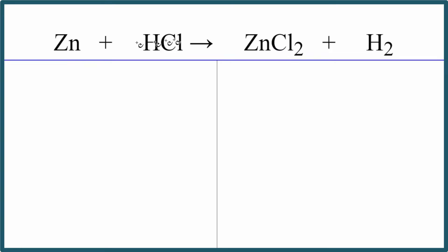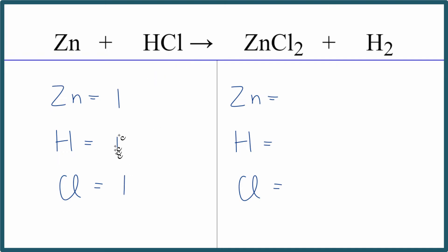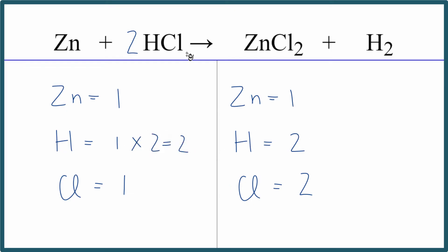Let's balance this equation. First I'll count up the atoms on each side — the reactant side has zinc, hydrogen, and chlorine. On the product side I have one zinc, two hydrogen atoms, and two chlorine atoms. By writing this counting ledger I can see what I need to do. If I change the coefficient in front of HCl to two, I get two hydrogens and two chlorines — everything matches, so this equation is balanced.